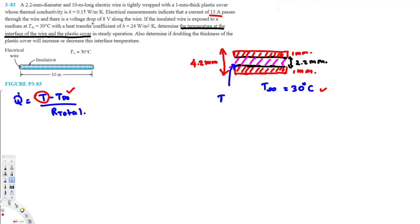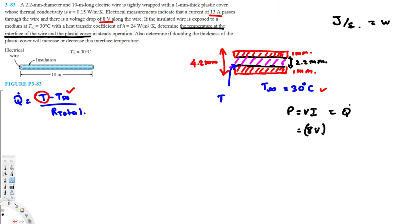They've provided 13 amperes and 8 volts. From physics, power P = V × I, and Q̇ equals power in watts. So Q̇ = 8 volts × 13 amperes = 104 watts. That is our heat transfer rate.